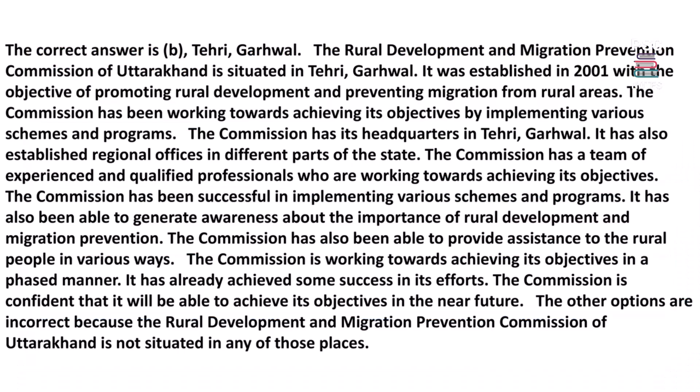The correct answer is b. Tairi, Garaywal. The Rural Development and Migration Prevention Commission of Uttarakhand is situated in Tairi, Garaywal. It was established in 2001 with the objective of promoting rural development and preventing migration from rural areas. The commission has its headquarters in Tairi, Garaywal, and has also established regional offices in different parts of the state.